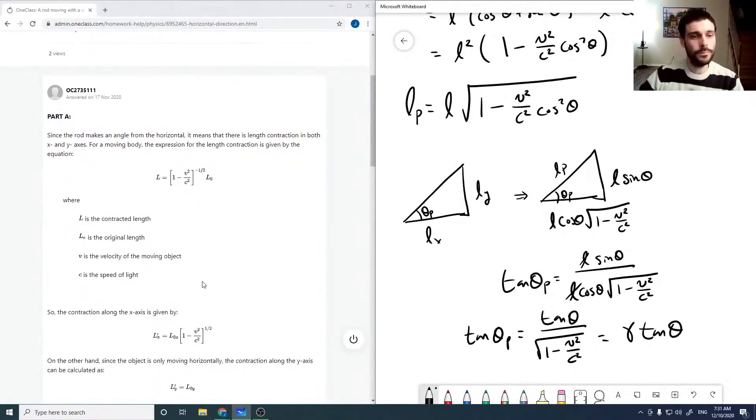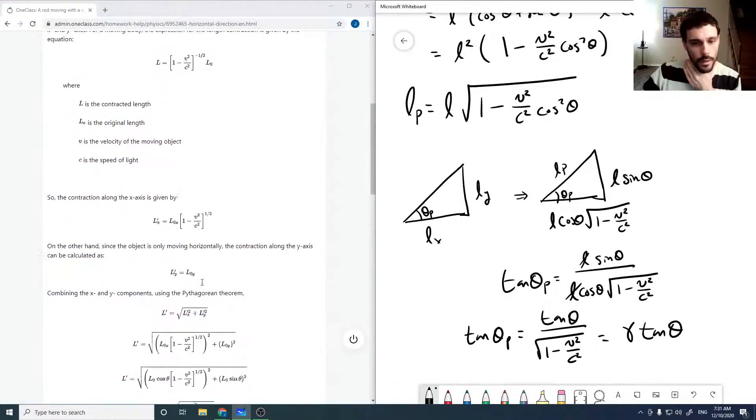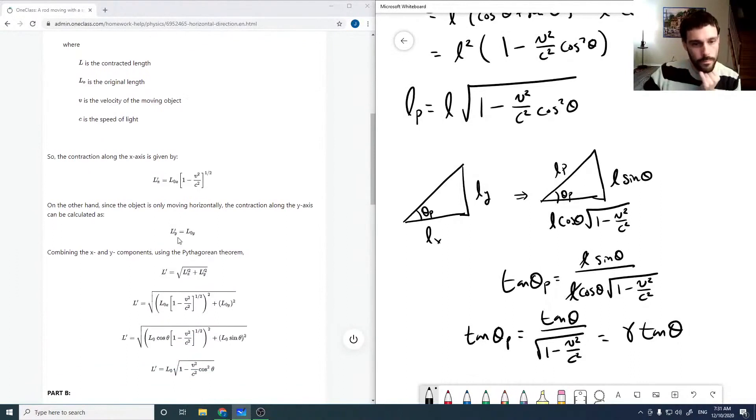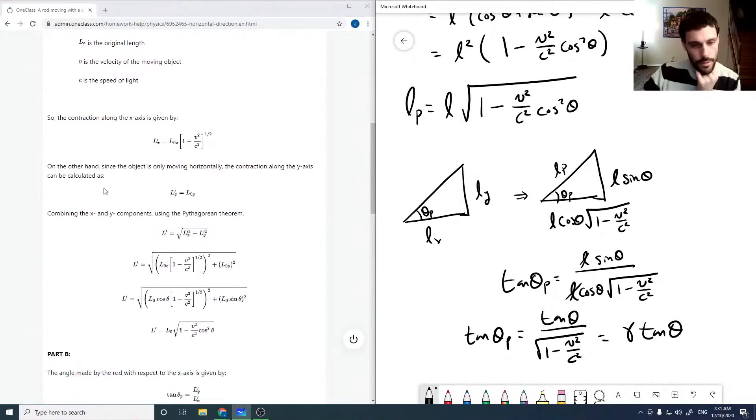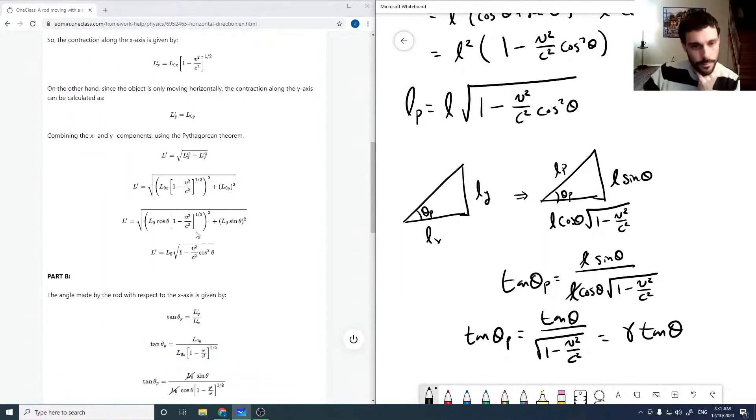Okay, so since the rod makes an angle from the horizontal, length of contraction in both axes. So no, it'll just be in the X, but that's probably just a mistake. So the compression along the Y is nothing, so it's not being compressed at all, so that's good. And then you get this.